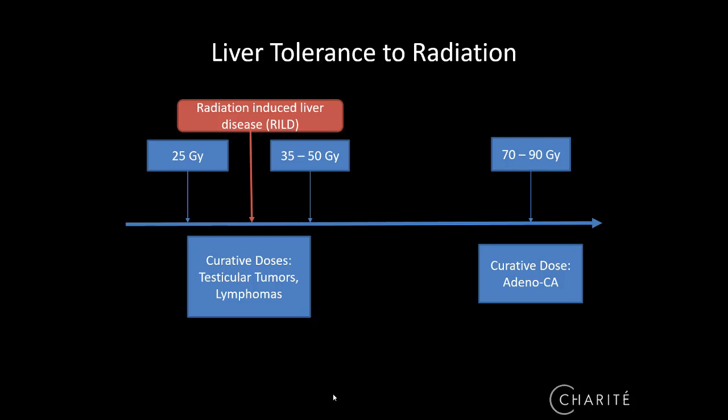We want a high dose within the tumors and a low dose in the healthy liver tissue. We need high doses — around 70 to 90 Gray — for adenocarcinoma. But when we exceed a dose to the whole liver of about 30 Gray, we risk radiation-induced liver disease, which is a heavy complication that might kill the patient.